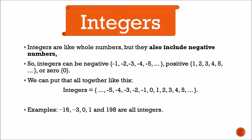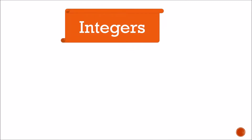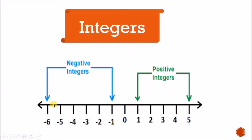Examples of integers are minus 16, minus 3, 0, 1, and 198 — these are all integers. But numbers like one-half, 1.1, and 3.5 are not integers. See on the number line: negative integers, positive integers, plus zero — all together are known as integers.